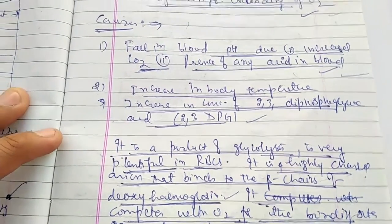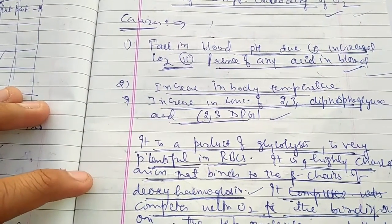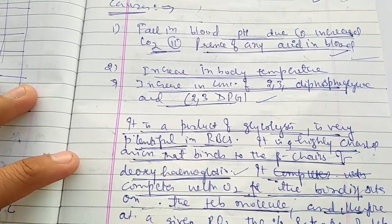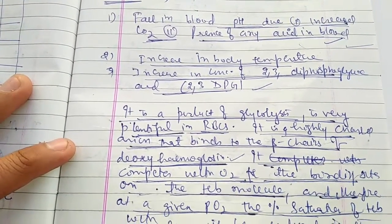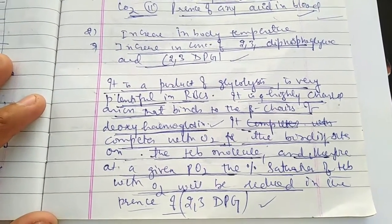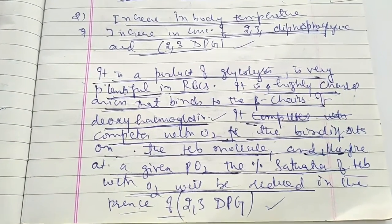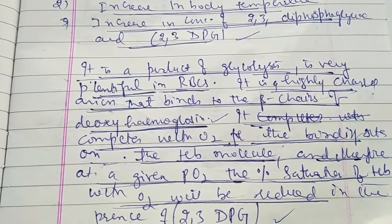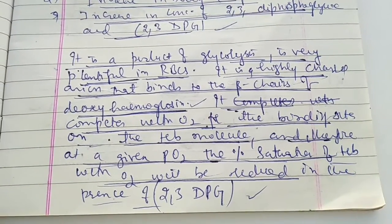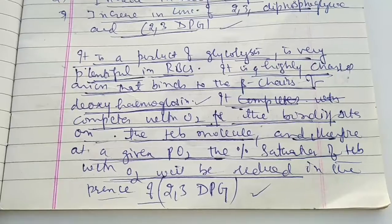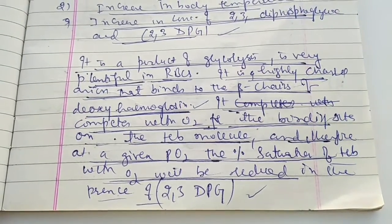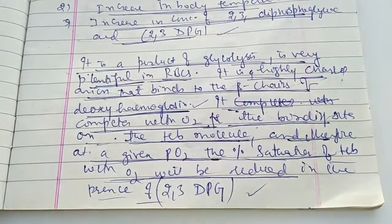A fall in blood pH due to increased CO2 (since CO2 is acidic in nature) shifts the curve. An increase in body temperature also shifts the curve. Additionally, an increase in concentration of 2,3-diphosphoglyceric acid (2,3-DPG), a byproduct of glycolysis plentiful in RBCs, is a highly charged anion that produces acidity and binds with the beta chain of deoxyhemoglobin, competing with oxygen binding. Therefore, at any given partial pressure, the percentage saturation of hemoglobin with oxygen is reduced in the presence of 2,3-DPG; if DPG levels increase, hemoglobin will be deoxygenated.